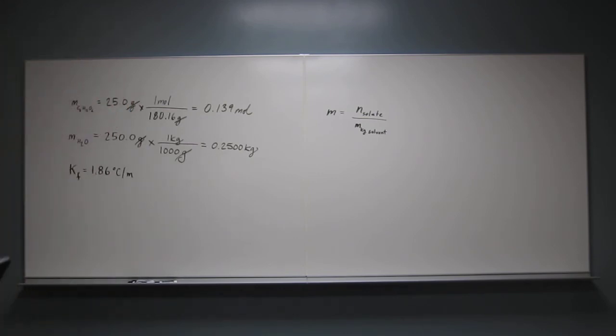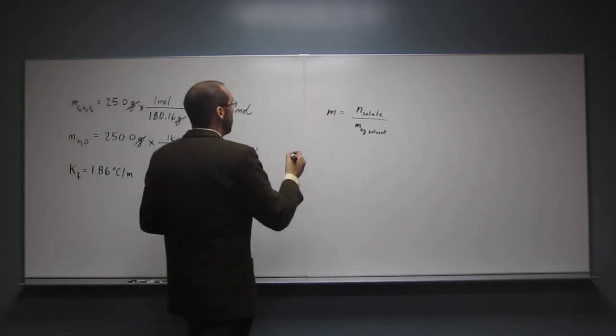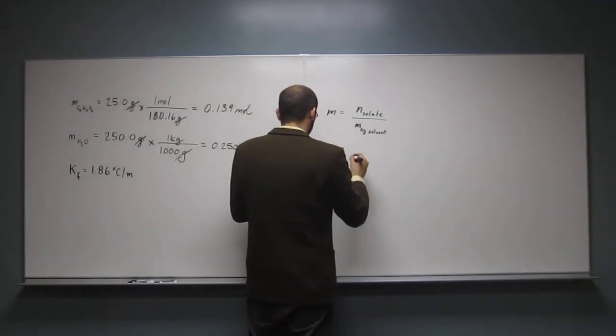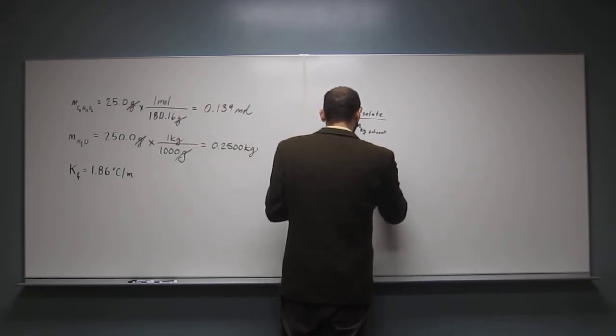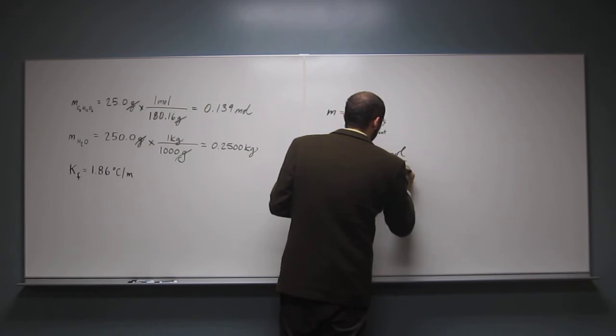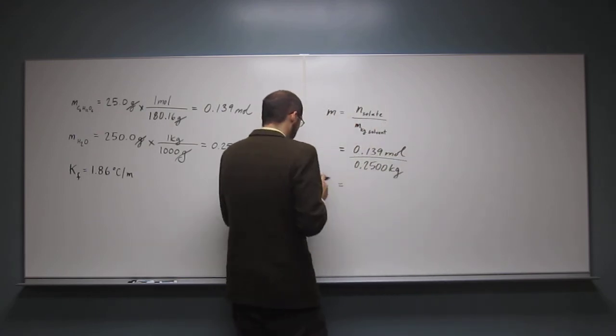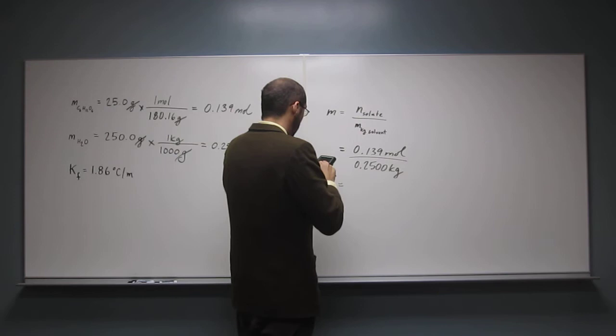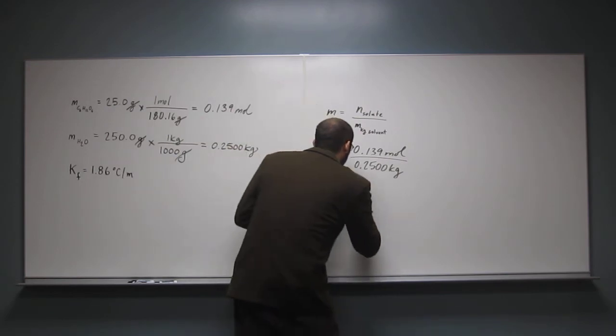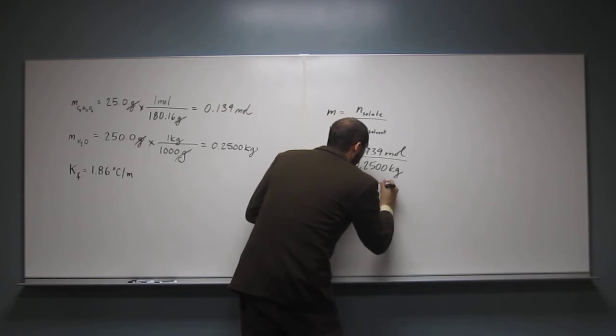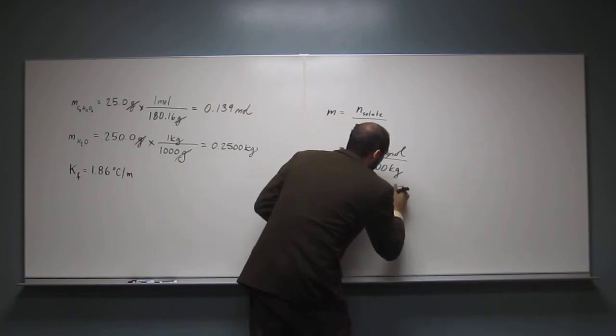Are we good? Yep, yes. So, now let's figure out what's the molality of this? So we say 0.139 moles divided by 0.2500 kilograms. So that's going to equal 0.555 mol to 3 sig figs.